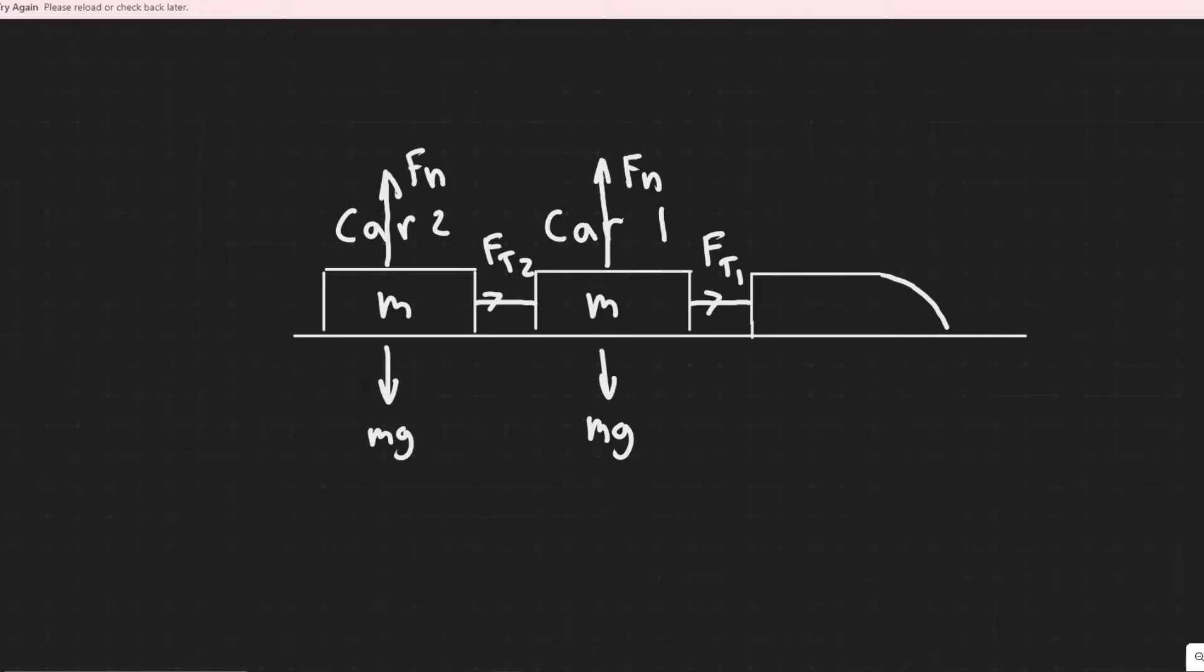And then another thing you need to realize is that this force of tension pulling it is going to be acting in both directions. And this is due to Newton's third law, right, which basically tells us that for every action, there's an opposite and equal reaction. This includes forces. So we have Ft2 and Ft1 basically pointing in each direction here like this.